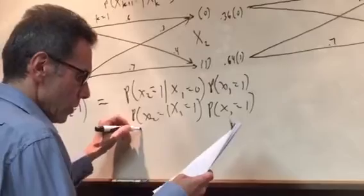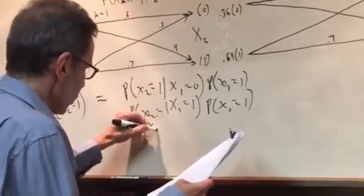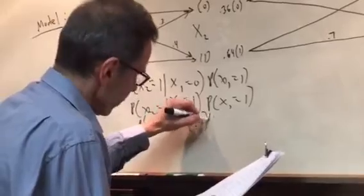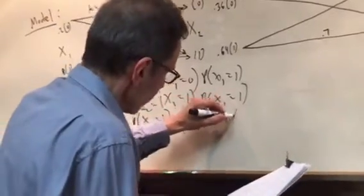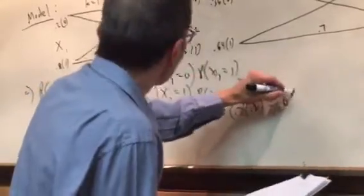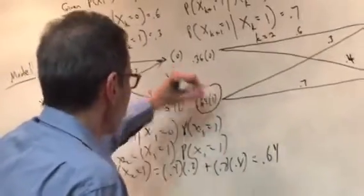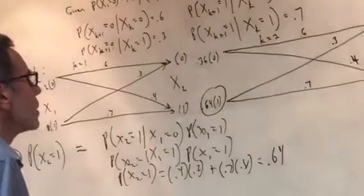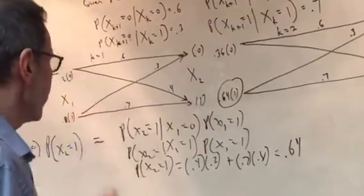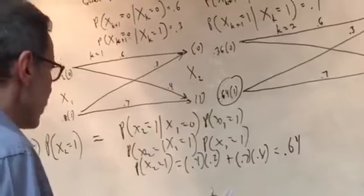Of x2 equal to 1 becomes 0.4 times 0.2 plus 0.7 times 0.8 equals 0.64, which is what we have here. So that checks out and that's good. My point is you can almost see it visually and then you do the check. Now we're going to do the same thing for x3.